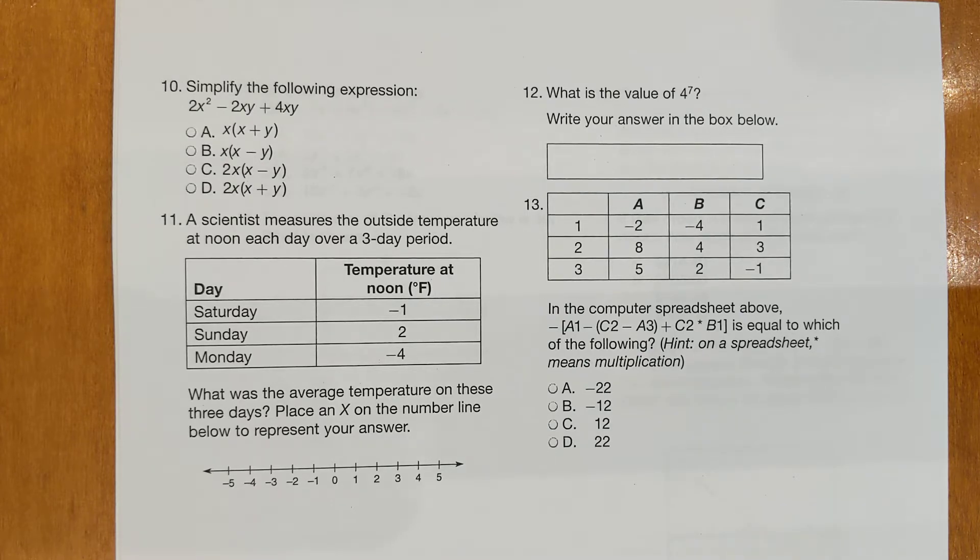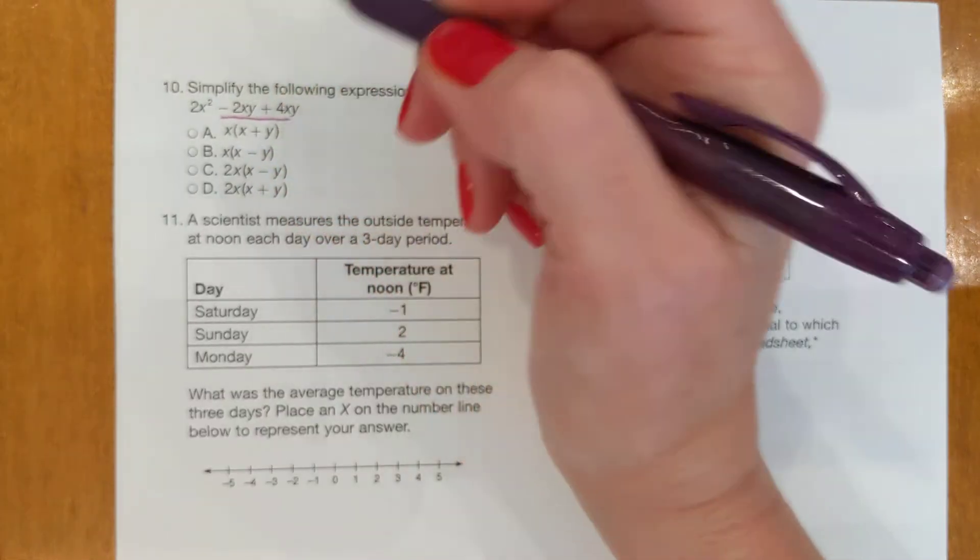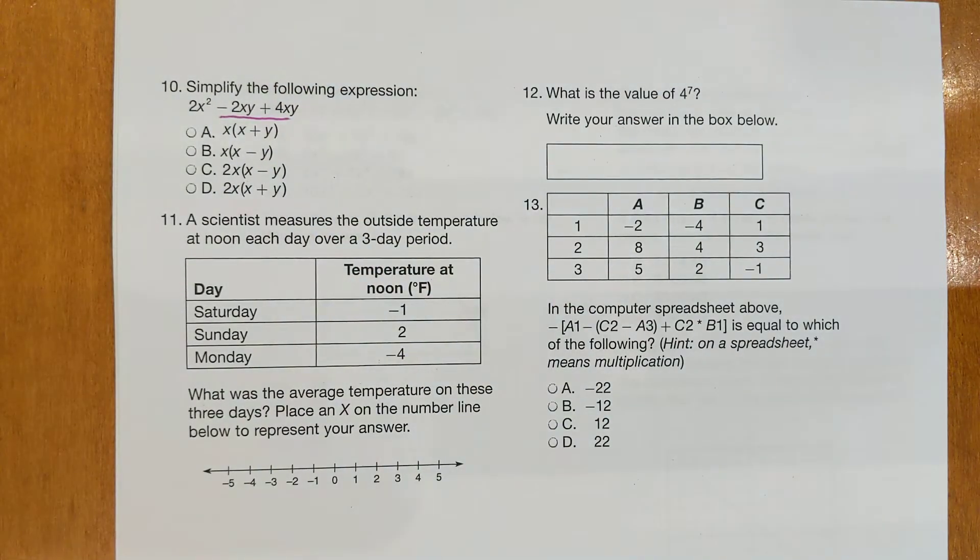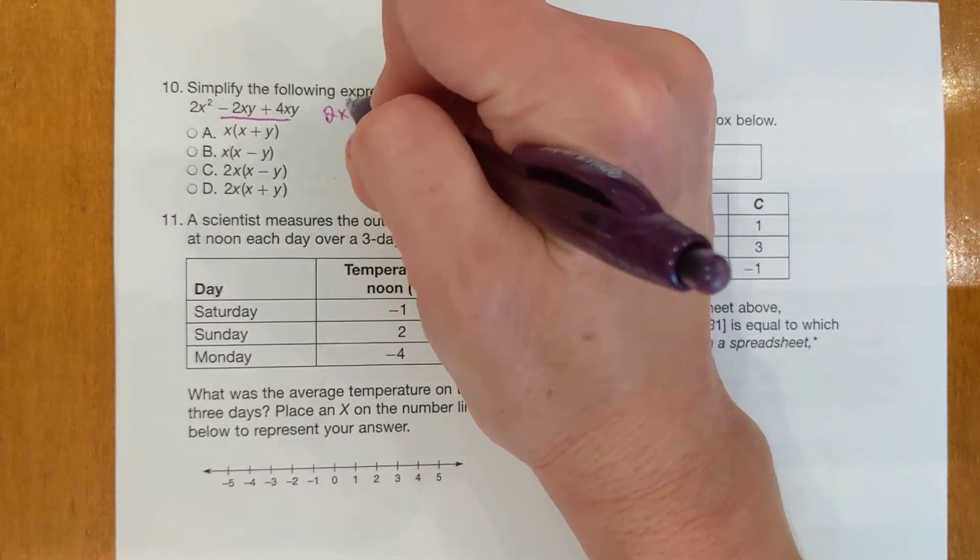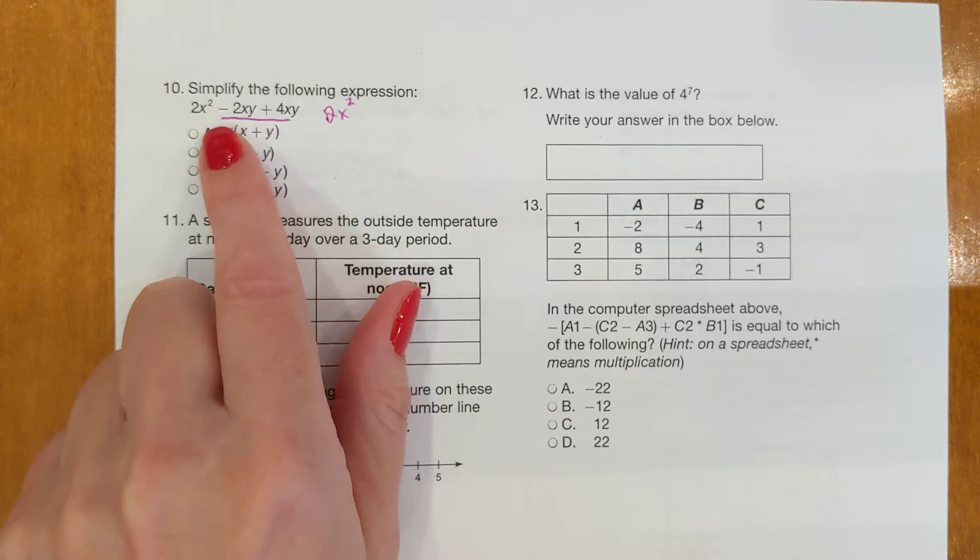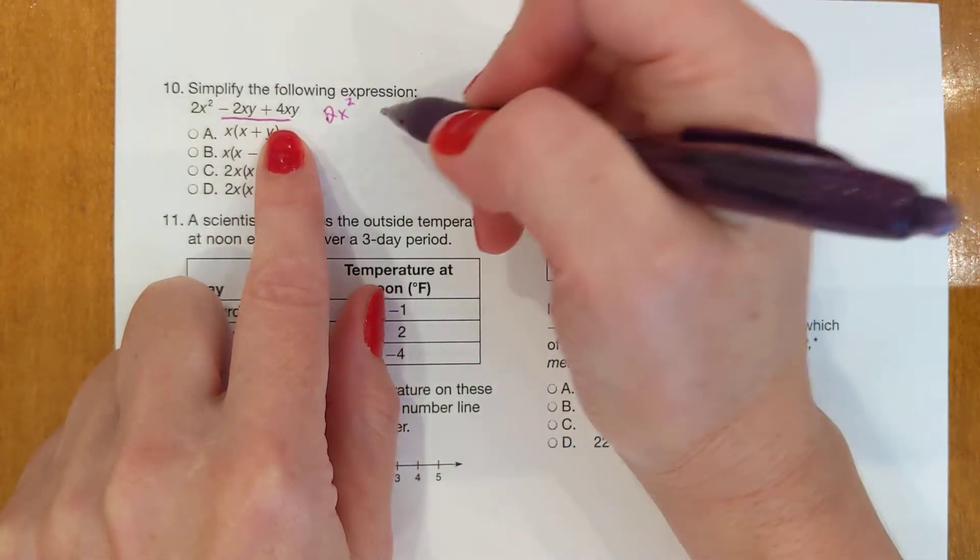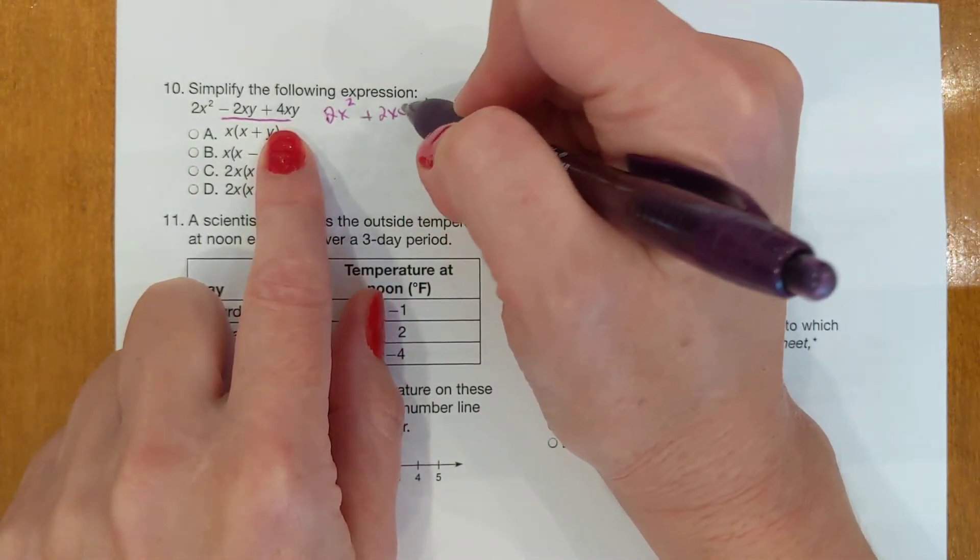On number 10, it says simplify the following expression: 2x squared minus 2xy plus 4xy. These are both like terms because they both have the same letters, x and y, so you can combine those. So it's 2x squared, and then negative 2 plus 4, different signs subtract, take the sign of the bigger number, so it's plus 2xy.